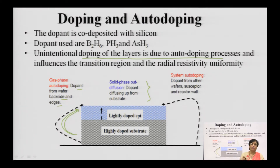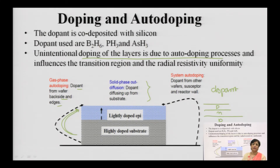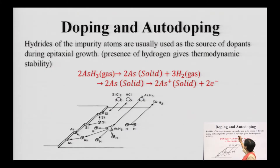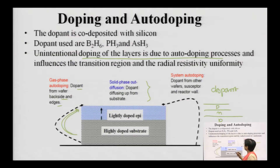Along with the normal epitaxial growth, there is a widespread process in which dopant particles are added along with your silicon. For example, in a BJT if you want to create a p layer and above it an n layer and then another p layer, you need to add a dopant into the silicon wafer itself during epitaxial growth. Such dopants are introduced in the presence of hydrogen for stability. The impurities used are diborane, phosphine, and arsine — these are the three basic hydrides introduced as part of the doping process.